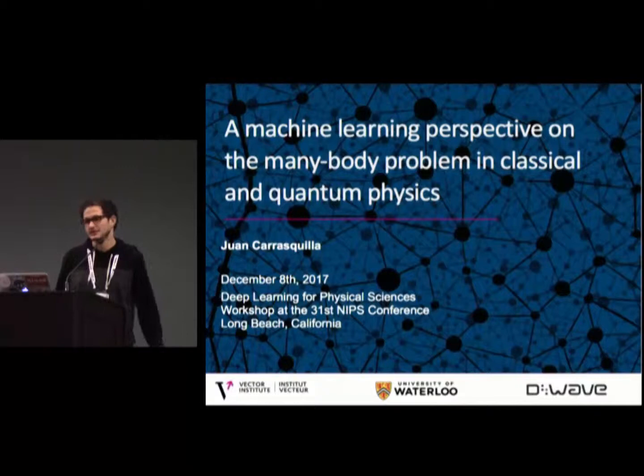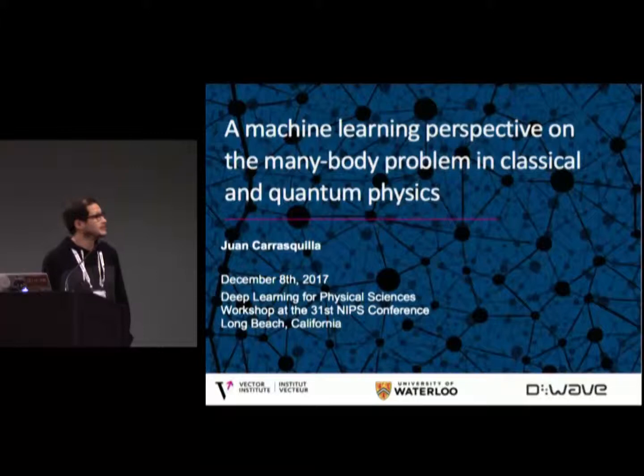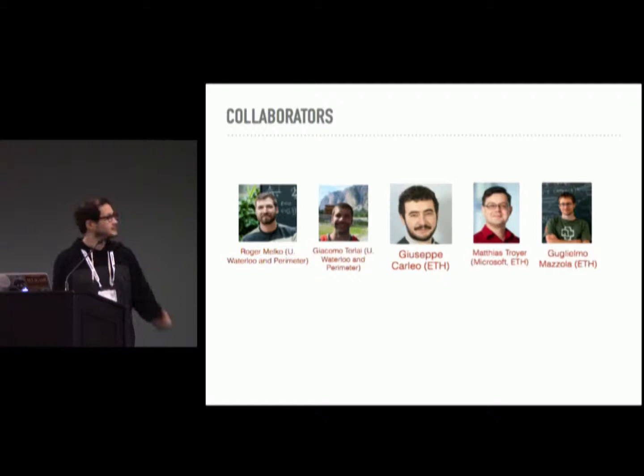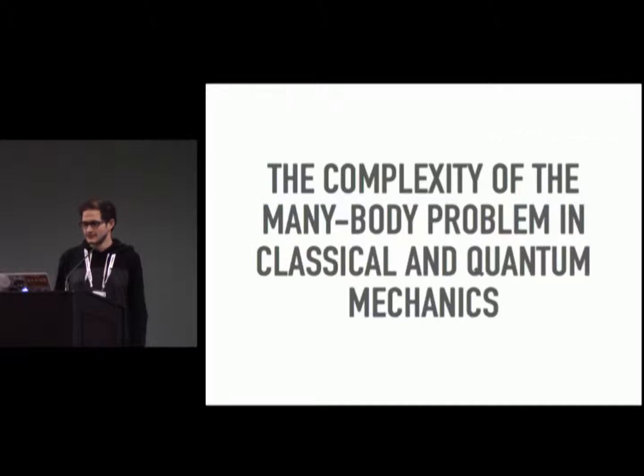I start by thanking the organizers for putting this workshop together. It's very nice, and it's an honor to be here. I'd like to tell you about a machine learning perspective on the many-body problem in classical and quantum physics. Let me first acknowledge my collaborators: Roger Melko at the University of Waterloo, Giacomo Torlai, Giuseppe Carleo from ETH, Matias Streuer, and Guglielmo Mazzola.